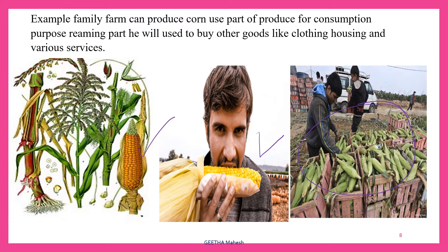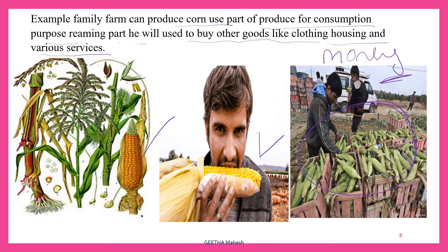For example, a family firm can produce corn. Use part of the produce for consumption purposes. The remaining part will be used to buy other goods like clothing, housing, and various services. If you sell this produce, you will get other goods like rice, milk, and medicines.